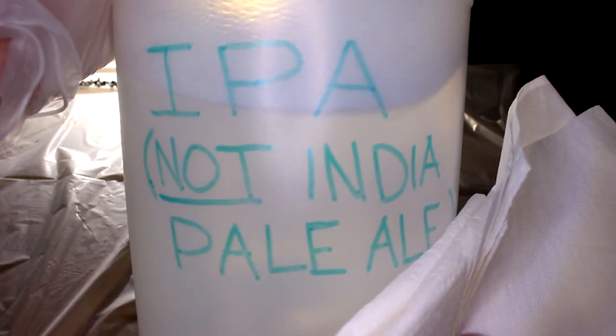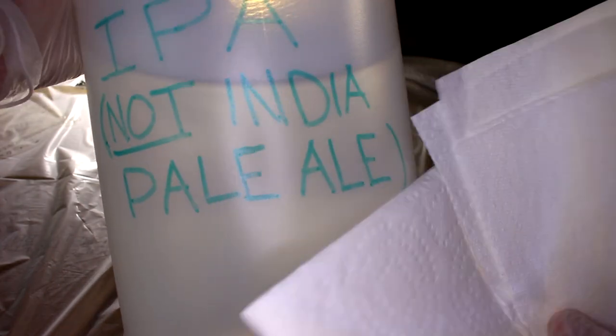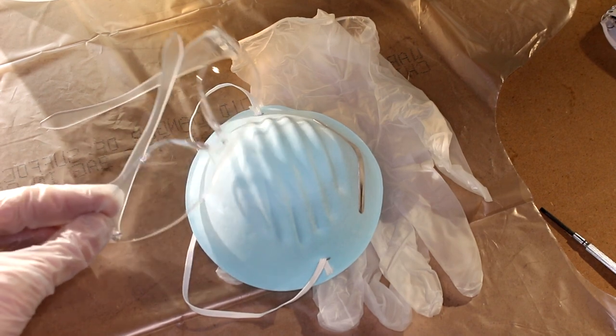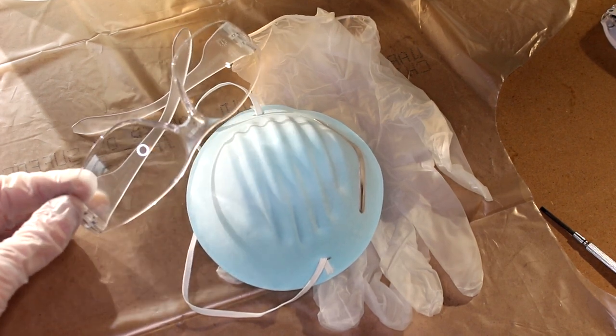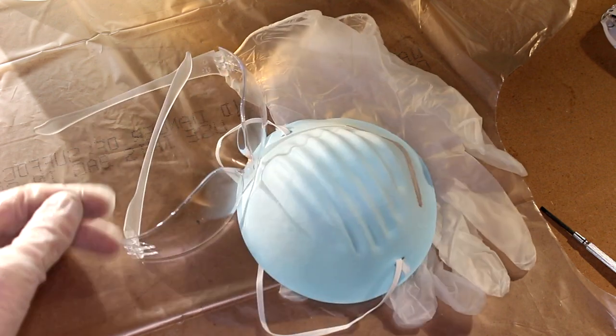As with all resin projects, it's a good idea to have some towels and isopropyl alcohol ready for cleaning. We will be in contact with the resin, so be sure to wear protective equipment like nitrile gloves, some glasses, and work in a well-ventilated area.